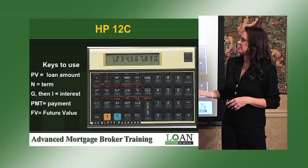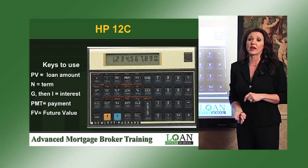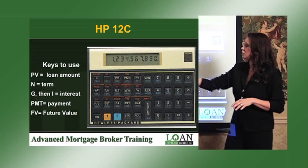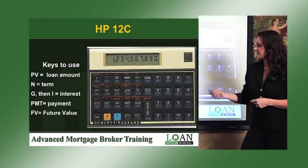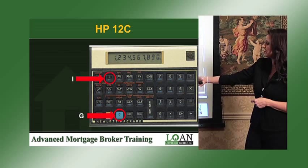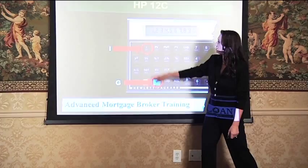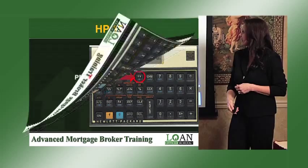On the HP 12C, you've got specific keys you're going to use. PV stands for present value and that's what you're going to use to enter the loan amount. N stands for amortization — that's basically going to be your term. To calculate interest you need to hit G and then I, which is gross interest, to enter your interest rate. PMT is your payment and FV is future value. Here's where your PV key is, your N for amortization key, and your I is right next to it using the blue G button at the bottom. So if you had 10% interest, you'd go 10, G, I — and that is going to be 10% interest, gross interest, so it multiplies by 12.